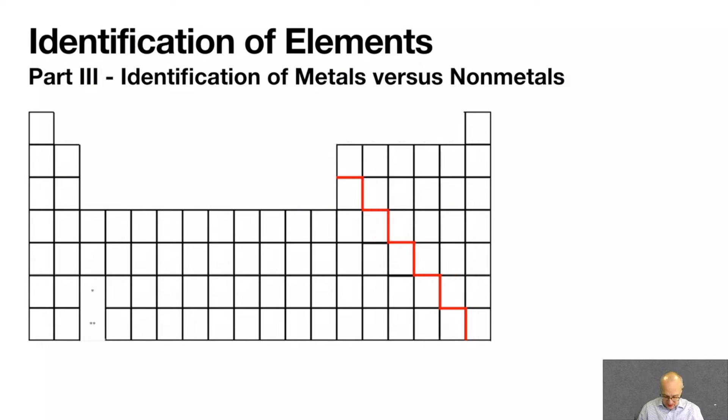Now, notice I cleverly avoided this square right here. This is the square for aluminum. Aluminum is not a metalloid, so it's an exception to the rule.